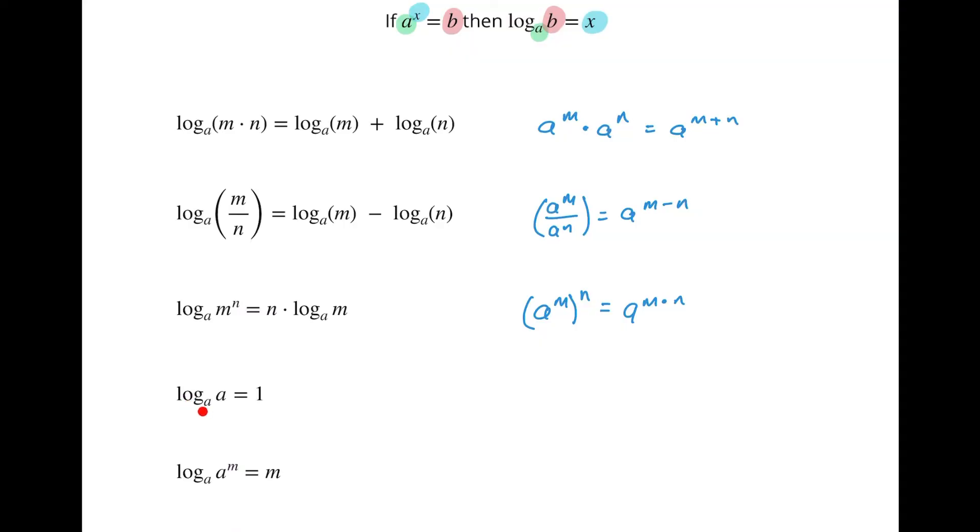What if we had log base a of a is equal to one? So a to some power, a to some power equals b. a to the first power equals a. Ah, so this is like an identity. This is saying a to the first power is just equal to a. That's our exponential rule that would go with that. What about this one?